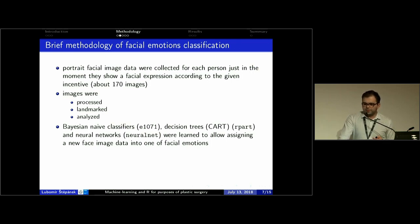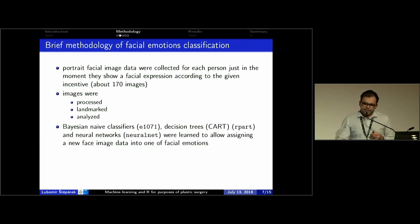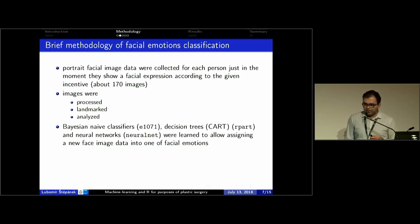In case of classification of facial images into facial emotions, the process is similar. Portrait facial image data were collected for each patient exposed to an emotional incentive — for example, they were told a joke to express a fun emotion. The images were then processed and landmarkized similarly. A Naive Bayes classifier using the E1071 package, decision trees using the rpart package, and neural networks using backpropagation with a sigmoidal activation function via the neuralnet R package were trained to assign new face image data into one of the facial emotions.